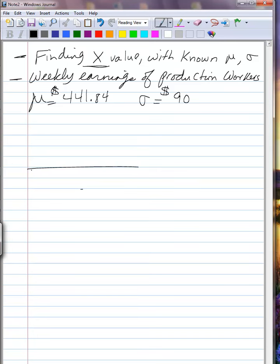Let's create an equivalent graph. We know on the x-axis the mean is 441.84 and a sigma of 90. We want to know that x value that will put a production worker in the top 20%.